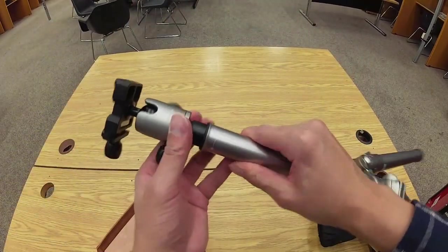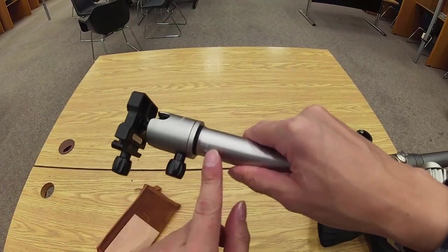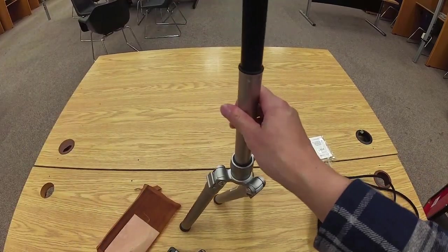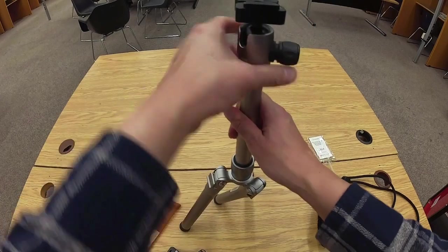There we go. So right here you twist it. So there are lock and unlock icons, and that allows you to extend the central part of the tripod.